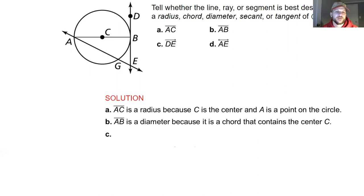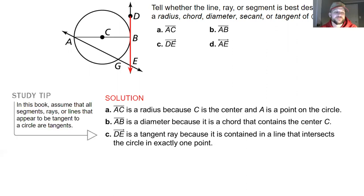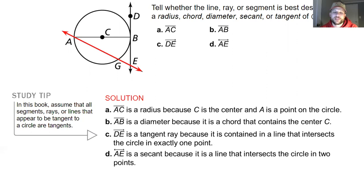In part C, line DE travels outside the circle but intersects it at exactly one point, making it a tangent — point B is the point of tangency. In part D, line AE travels between two points on the edge of the circle but does not contain the center, so AE is considered a secant.